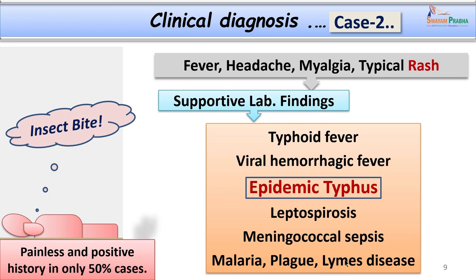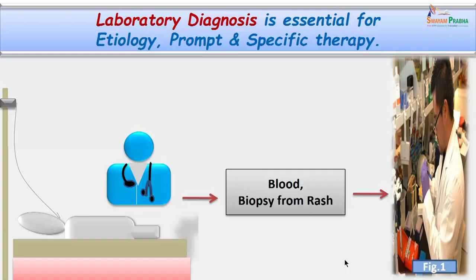In case 2, the child did not have any rash on the palms and soles — that is one of the diagnostic signs in epidemic typhus, where the palms and soles are usually spared. It is important to go for supportive lab diagnosis. A detailed microbiological workup is important for confirming the clinical diagnosis as well as initiating specific therapy, because these diseases may develop complications and could be fatal.